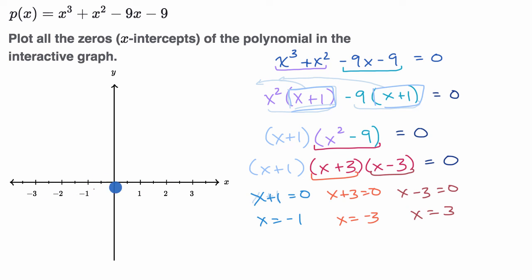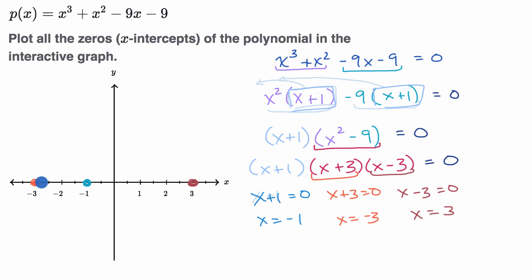We can now plot these on the interactive graph. So we have x = -1, which is right there; x = -3, which is right there; and x = 3, which is right there. The reason this is useful is it can help inform what the graph looks like — it tells us where the graph intersects the x-axis. So the graph might do something like this, and we would look at other information to determine the exact shape.